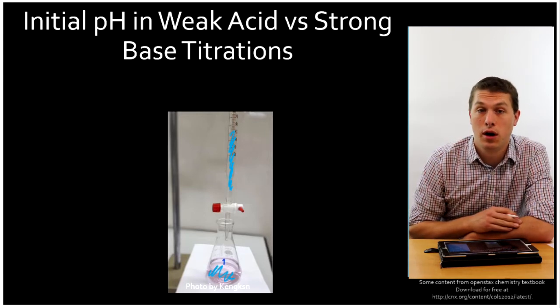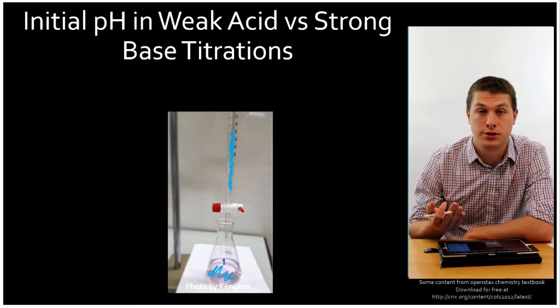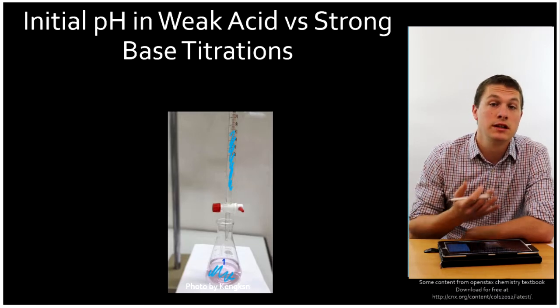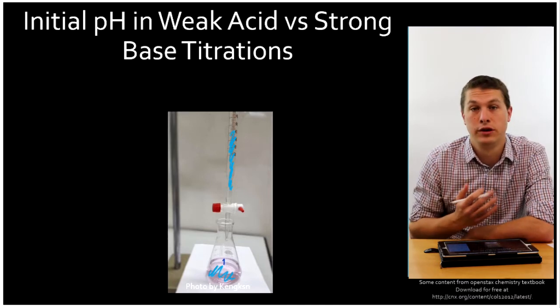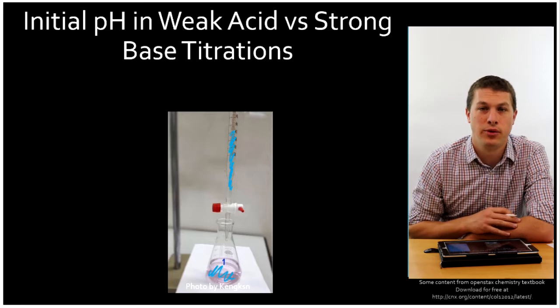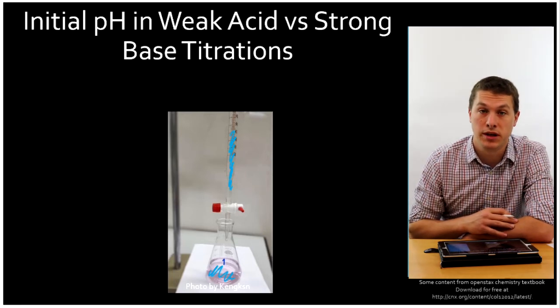In another video, which I'll link to below, we'll calculate the pH along two different points of the titration. So this works a little differently than a strong acid base titration, because our weak acid only partially dissociates, and that changes how we do our calculations. So first let's take a look at what the initial pH will be and how we can do it.